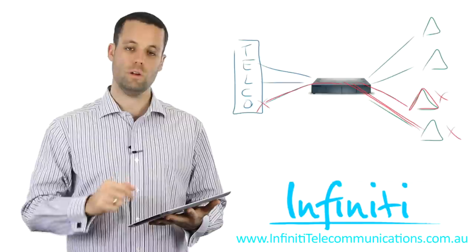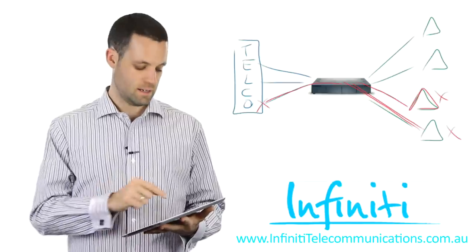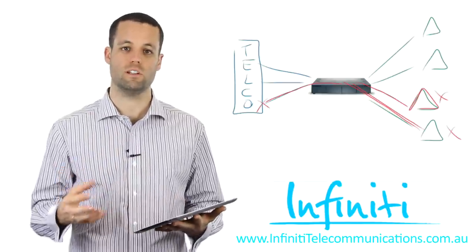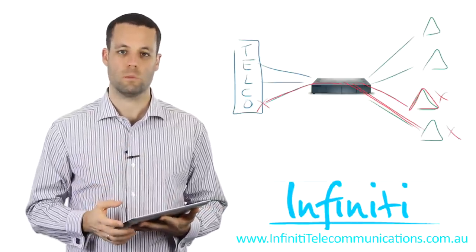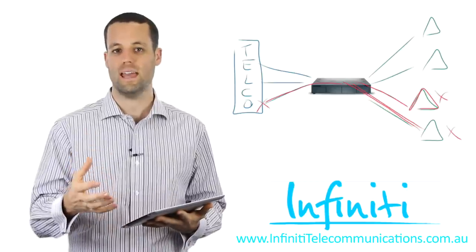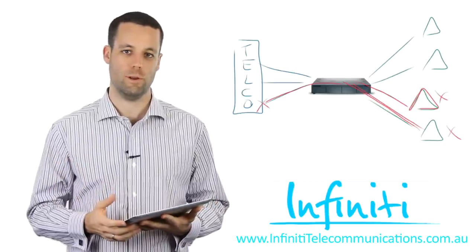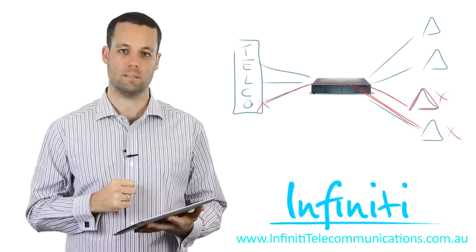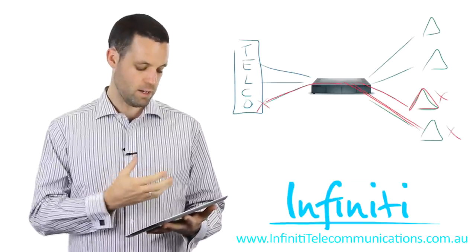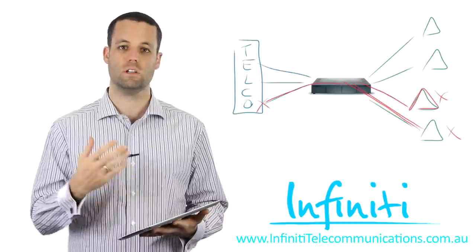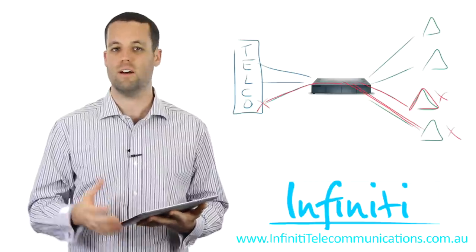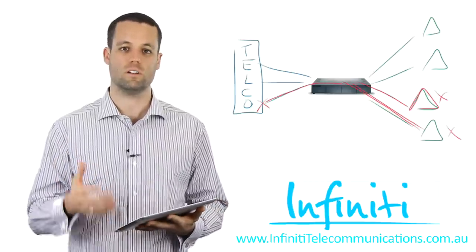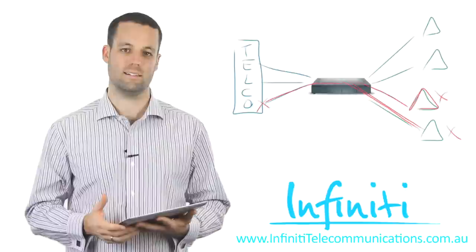What happens is the two internal parties and the third party are all connected into a conference bridge inside the PABX — because the handsets are just like keyboards to a computer, and the function and power is inside that PABX box. So in this scenario, it still leaves two free phone lines for other staff members and clients to call into the business.